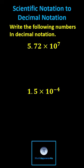Write the numbers in decimal notation. When multiplying by a positive power of 10, a number gets larger. When multiplying by a negative power of 10, a number gets smaller.